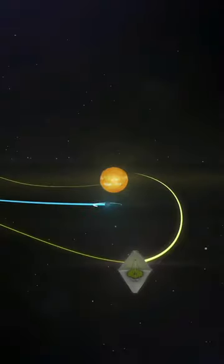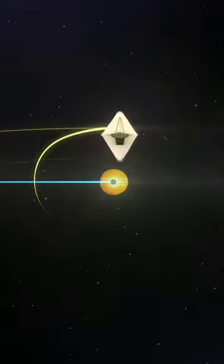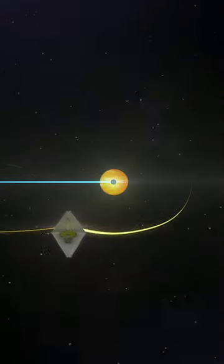Webb also has a much bigger mirror than Hubble. This larger light-collecting area means that it can peer farther back into time than Hubble is capable of doing.